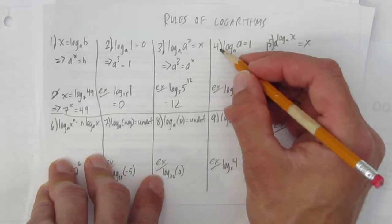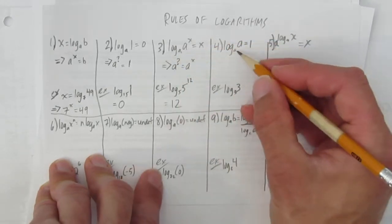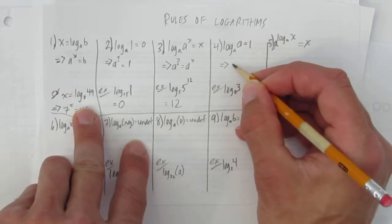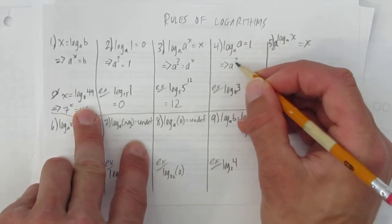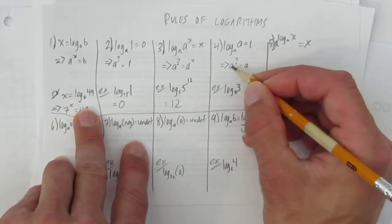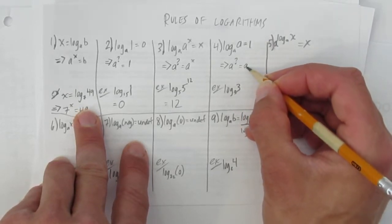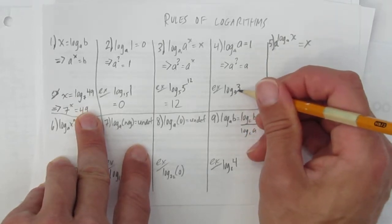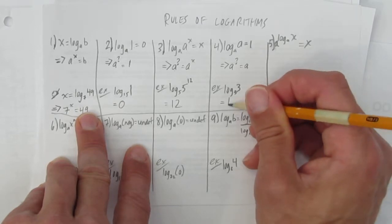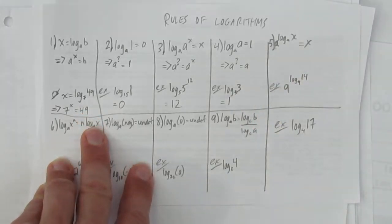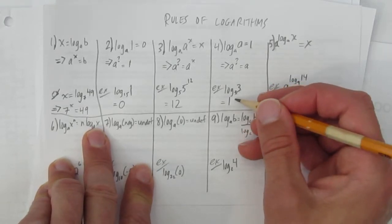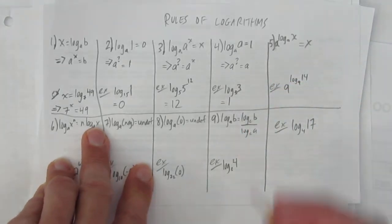Rule number 4 is a specific case of rule number 3, which is log base a of a equals 1. Again, that's just like thinking rule 1. a is the base to what exponent has to equal a. a to the power of what equals a? Obviously, the power is 1. So when you're doing this, if you see log base 3 of 3, you can just write 3 to the power of what equals 3. The answer is just 1. Just jump right to the answer. Log base 3 of the number 3 just gives you 1. That's rule 4.